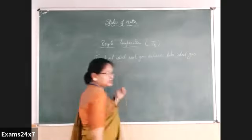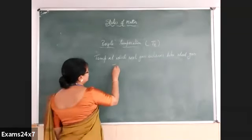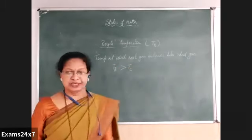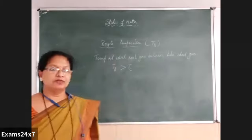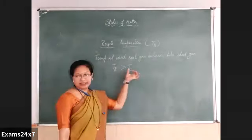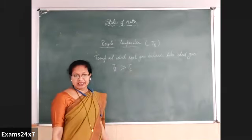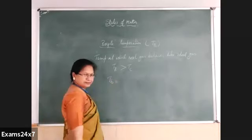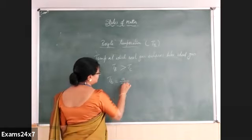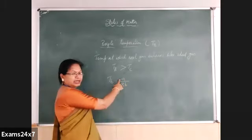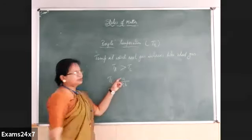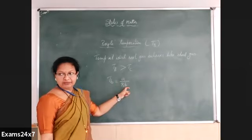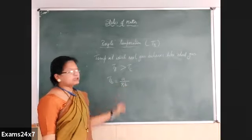This temperature is quite high. In fact, TB for a given gas is higher than Tc, the critical temperature. Usually TB is quite higher than Tc. The relation of TB is A divided by R·B, where A is the Van der Waals constant related to force of attraction, B is the Van der Waals constant related to volume, and R is the gas constant.